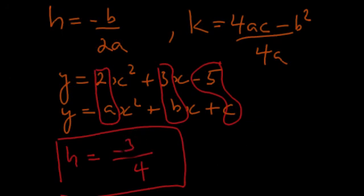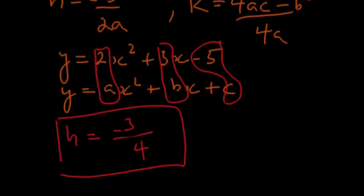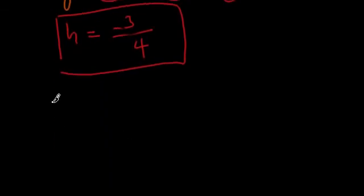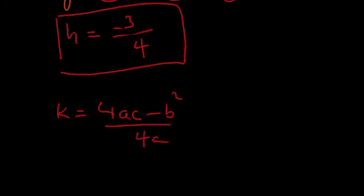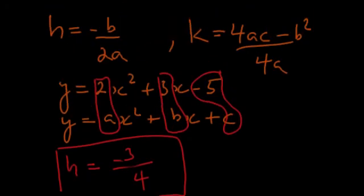Let's do our k value next. The equation for k is (4ac - b²)/(4a). Let me scroll up here.